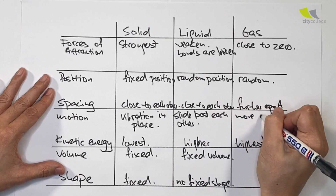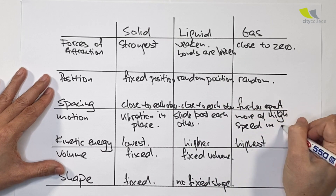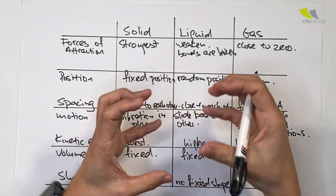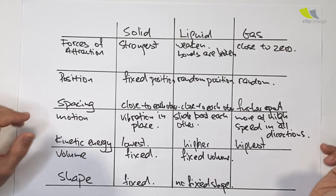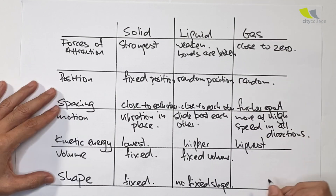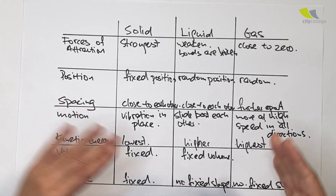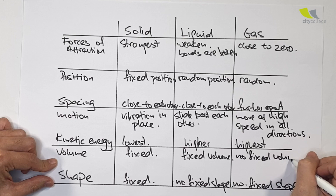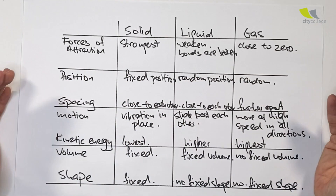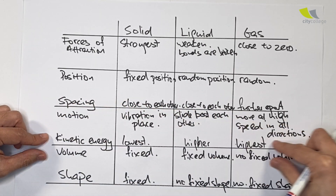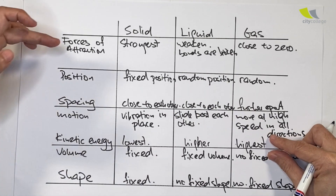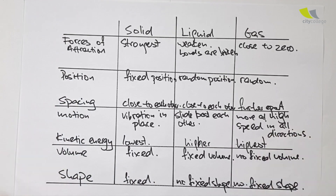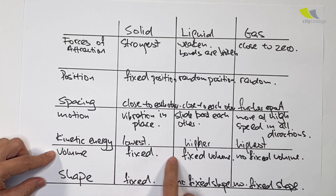Motion for gas: they are able to move at high speed in all directions. For liquid, they are moving at high speed but they are bounded — still kind of connected to each other with a flexible connection. Because gas particles are able to move at fast speed in all directions, there is no fixed shape. And because they are further apart, there is no fixed volume. We know that we are able to compress gas — why? Because they are far apart in the first place. So the story always starts with the kinetic energy of the particles. That kinetic energy determines whether they can overcome forces of attraction, and that affects position, spacing, and motion, which determines whether volume and shape are fixed.